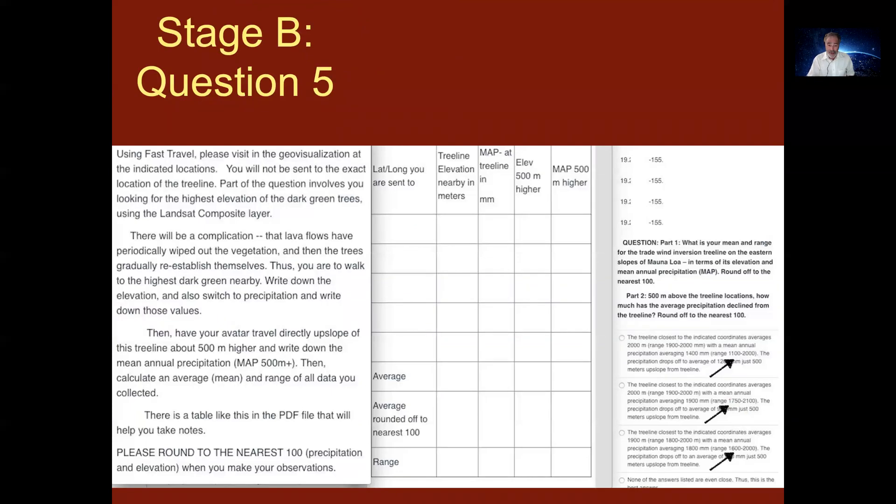In this question, you're given five locations and you're going to go to these different locations with the goal of being a scientist. You're going to decide what the tree line is in Hawaii and what the precipitation is that influences the tree line. So you're going to go to different locations and you're going to determine the tree line, then determine the mean annual precipitation of the tree line in millimeters. Then you're going to jump above that 500 meters and look at the precipitation 500 meters above the tree line and answering a two-part question.